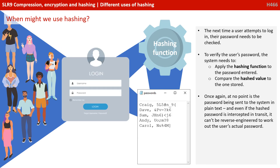The next time a user attempts to log in, their password needs to be checked. To verify the user's password, the system needs to apply the hashing function to the password entered, send it off, and then compare the hashed value to the one stored. Once again, at no point is the password being sent to the system in plain text. And even if the hashed password is intercepted in transit, it can't be reverse engineered to work out the user's original password.